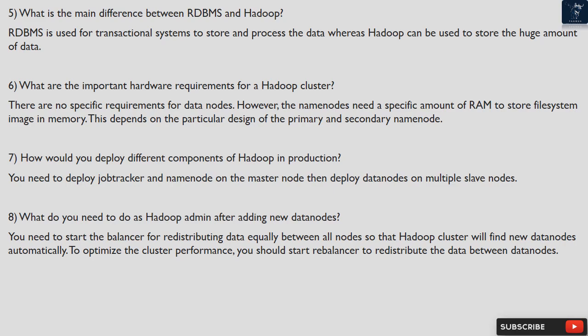Question 8: What do you need to do as a Hadoop admin after adding new data nodes? You need to start the balancer for redistributing data equally between all nodes so that the Hadoop cluster will find new data nodes automatically. To optimize cluster performance, you should start the rebalancer to redistribute the data between data nodes.